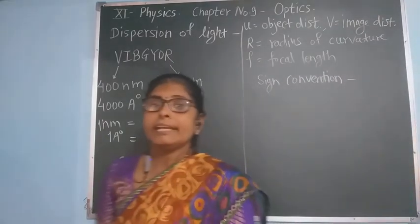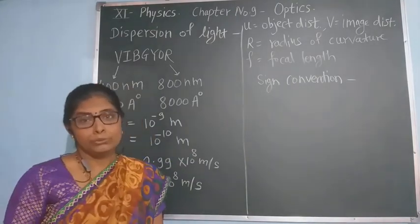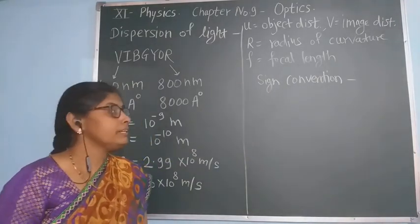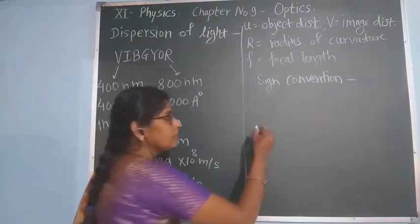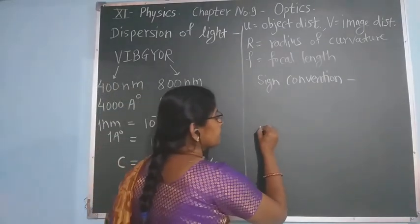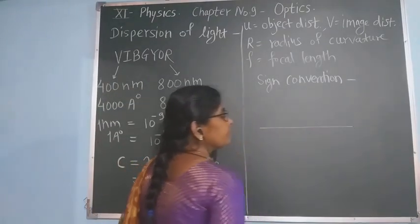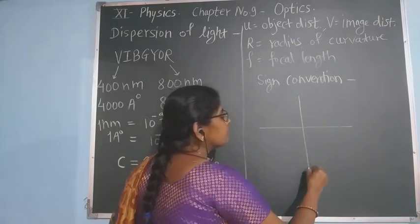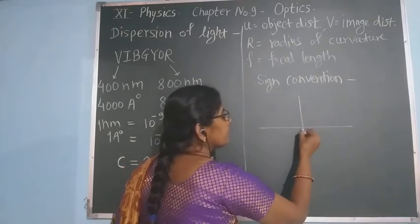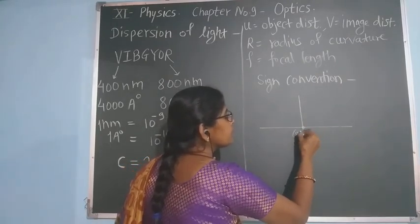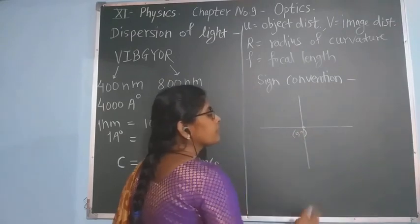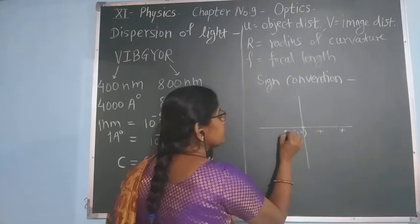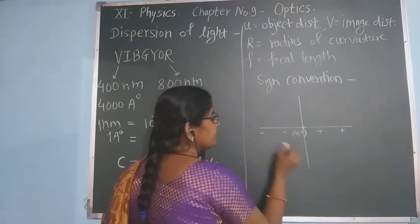This Cartesian sign convention is similar to the coordinate system — the geometrical coordinate system. There is an origin at 0, 0. Towards the right are positive numbers, towards the left are negative numbers. Downward is negative, upward is positive. It has four quadrants: first, second, third, and fourth.